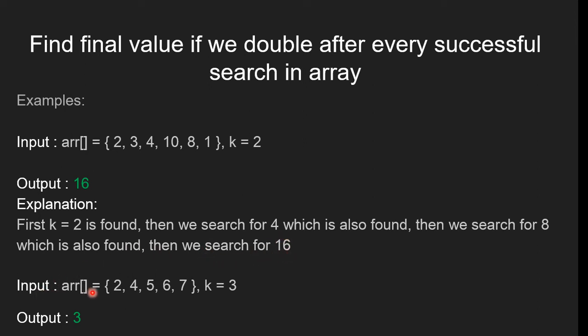In the second example, the array is [2, 4, 5, 6, 7] and k equals 3. The output should be 3, as 3 is not present in any position of the array. So we return the value of k.